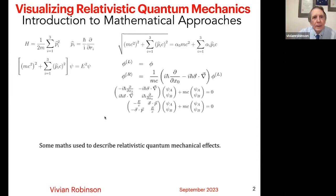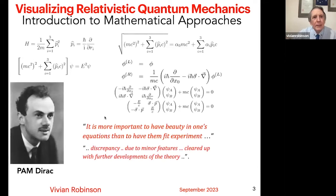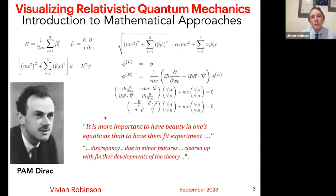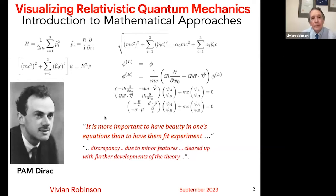Now, the complexity — there are a couple of people who, in my opinion, have contributed to the complexity. One of them was Dirac with his comment that it is more important to have beauty in one's equation than to have them fit experiment, because discrepancy due to minor features can be cleared up with further developments of the theory.